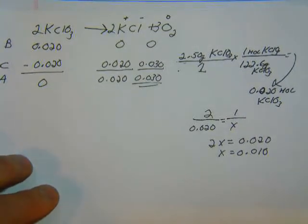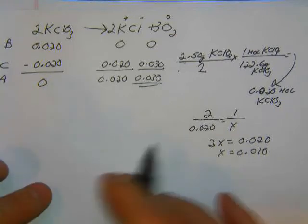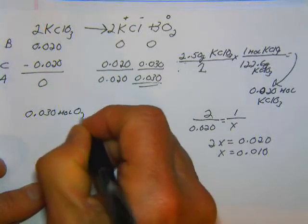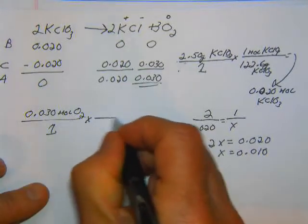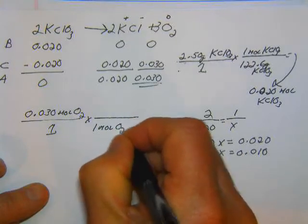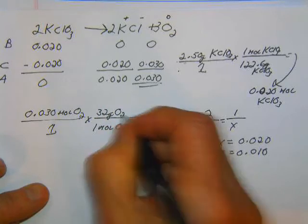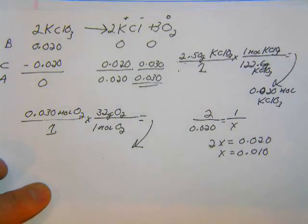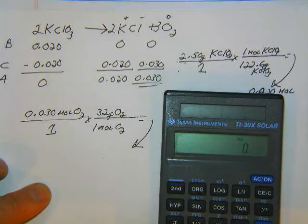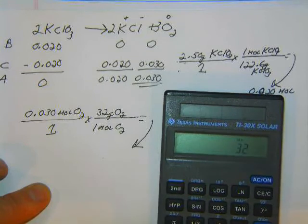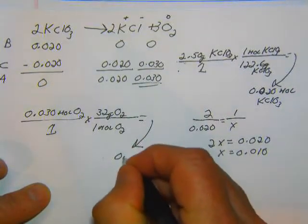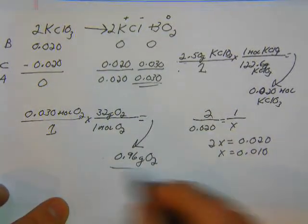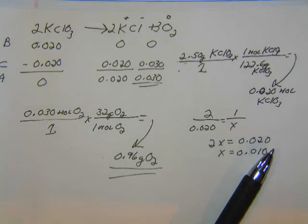And the question asks, how many grams of oxygen gas should be given off? Well, we've got the moles. Let's convert it to grams. So 0.030 moles of O2. And I know in one mole of O2, there's 32 grams of O2. And that equal, 0.03 times 32 equals 0.96. 0.96 grams of O2 are produced. So there's our answer. So there's the first two problems. And we'll come back with the next two.